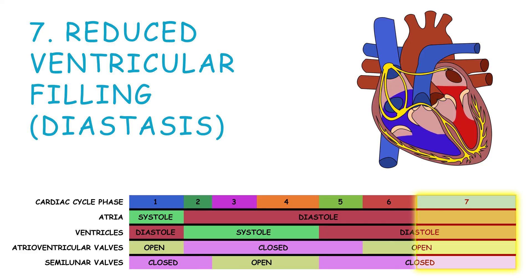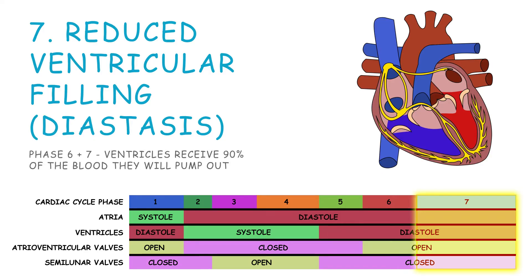On to phase 7, the last and longest phase, called reduced ventricular filling, or diastasis. During phases 6 and 7, the ventricles receive 90% of the blood they will pump out. The remaining 10% is acquired during phase 1 of the next cardiac cycle, atrial contraction. The initial 90% of blood enters the ventricles while the atria are relaxed, so the process is called passive ventricular filling.